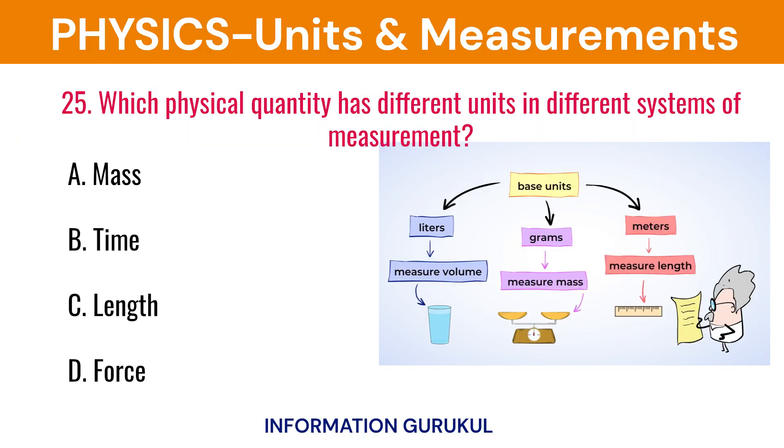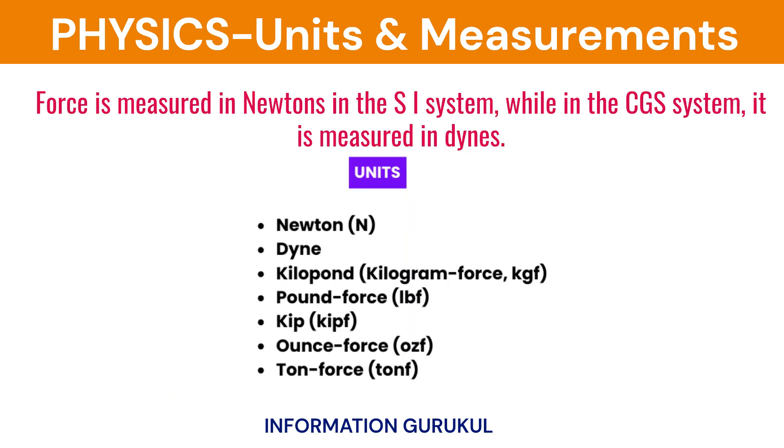Which physical quantity has different units in different systems of measurement? Force. Force is measured in newtons in the SI system, while in the CGS system it is measured in dynes.